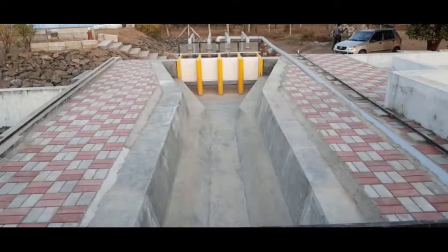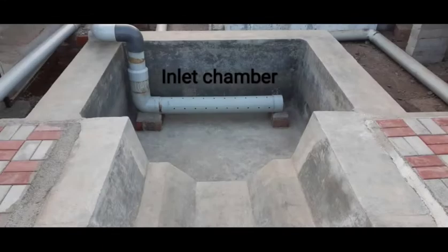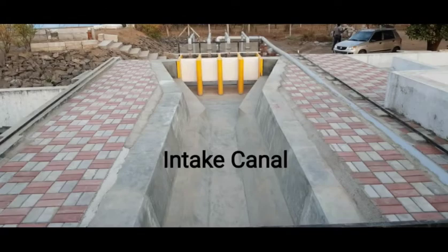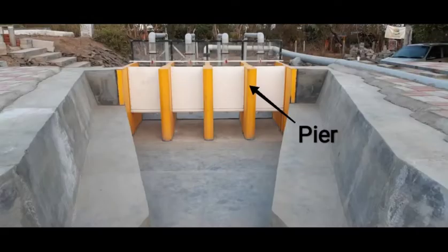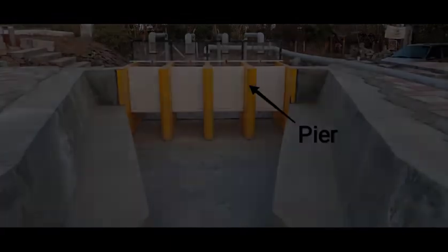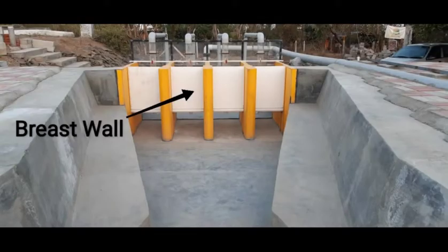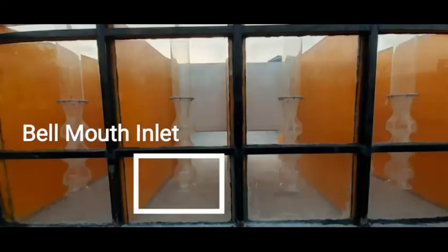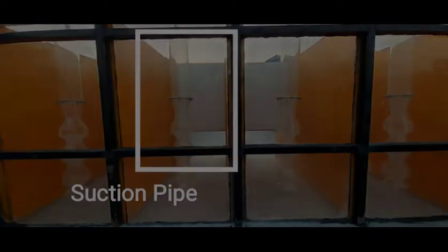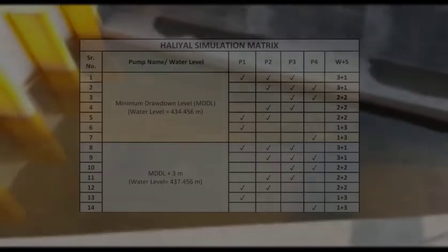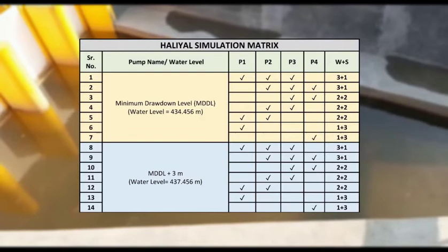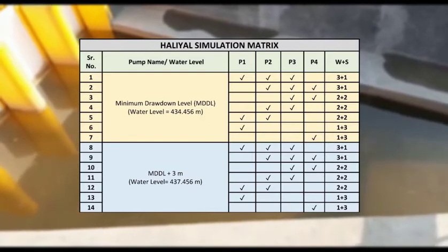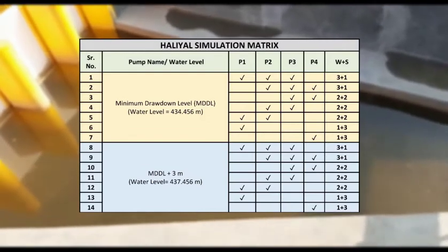Components constructed in the model include the inlet chamber, intake canal, the forebay, the piers separating the pump bays, the breast wall arrangement, the bell mouth inlet, and suction pipe. The various combinations of pump operations were selected by maintaining the water level at minimum drawdown level and at minimum drawdown level plus 3 meter.